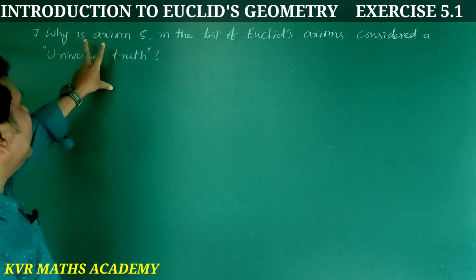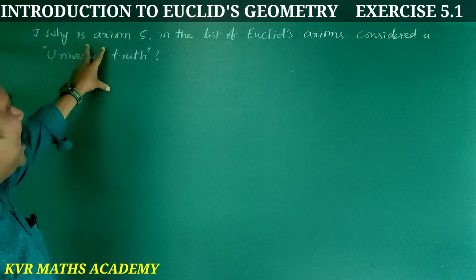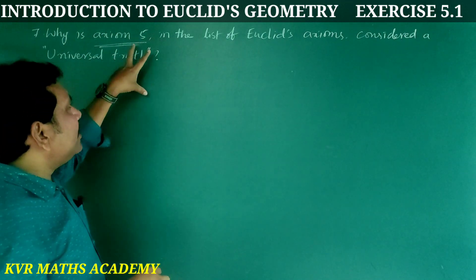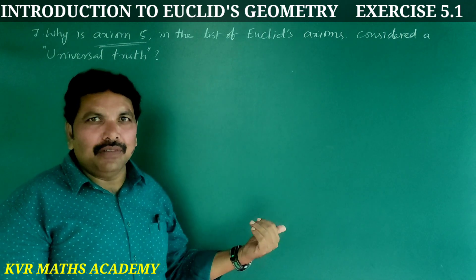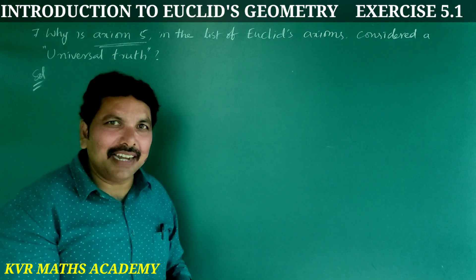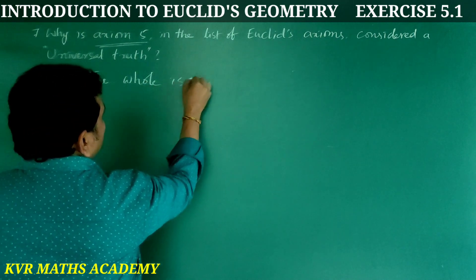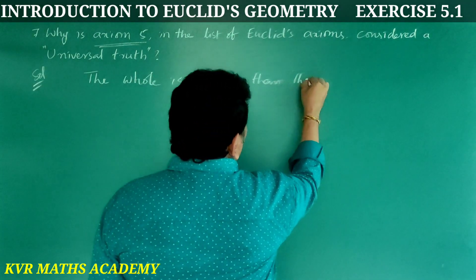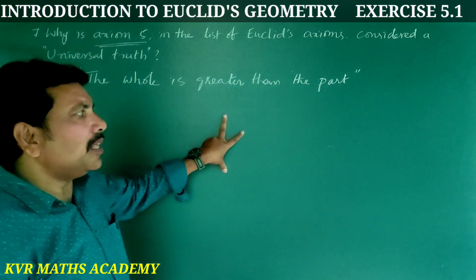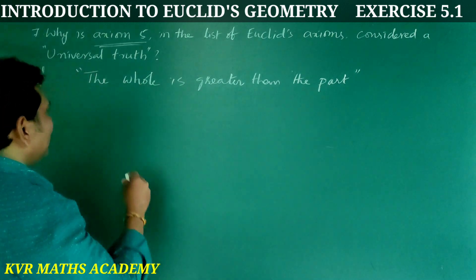Seventh question — the final question in this chapter: Why is Axiom 5 in the list of Euclid's axioms considered a universal truth? Let's explain the solution. Euclid's Axiom 5 states: the whole is always greater than the part.